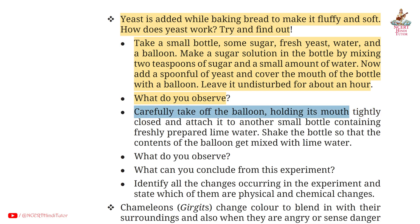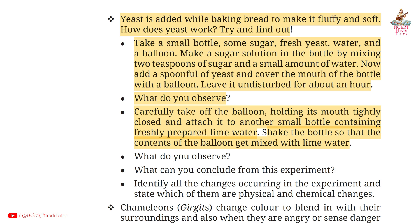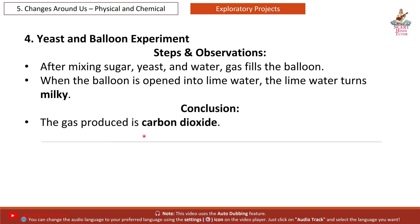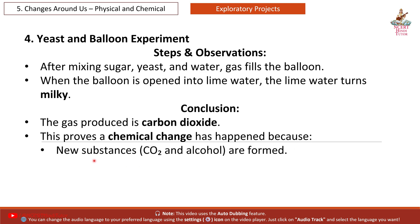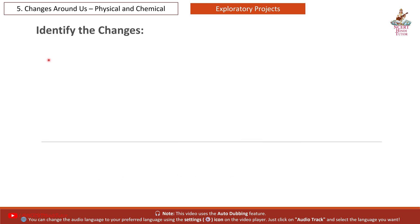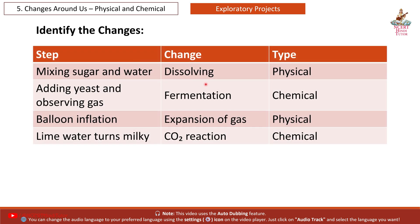Carefully take off the balloon holding its mouth tightly closed and attach it to another small bottle containing freshly prepared lime water. Shake the bottle so that the contents of the balloon get mixed with lime water. The gas produced is carbon dioxide — this proves a chemical change has happened because new substances CO2 and alcohol are formed. The process is fermentation caused by yeast. Changes identified: mixing sugar and water (dissolving) — physical; adding yeast and observing gas (fermentation) — chemical; balloon inflation (expansion of gas) — physical; lime water turns milky (CO2 reaction) — chemical.